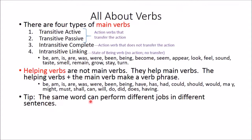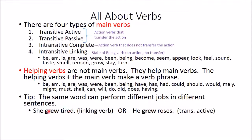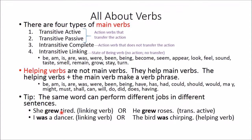Here's a tip: the same word can be doing a different job in a different sentence. For example, 'she grew tired' — she equals tired, so this is a linking verb. But 'he grew roses' is a transitive active verb because he is doing the action of growing and roses is the direct object that receives the action. Similarly, 'I was a dancer' is a linking verb, while 'the bird was chirping' uses 'was' as a helping verb because 'chirping' is the main verb. Nothing is automatic — you have to look at how the parts are working together.